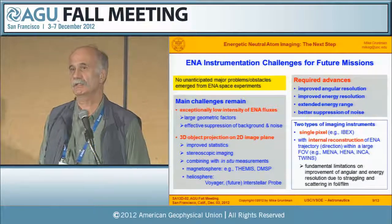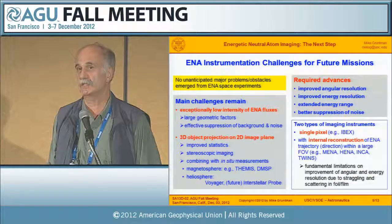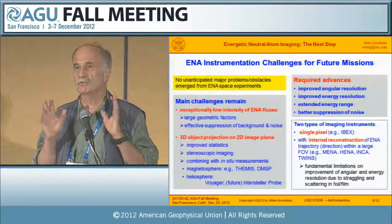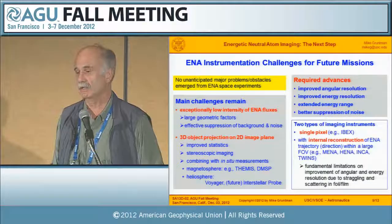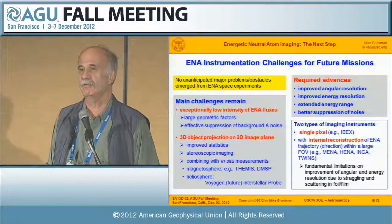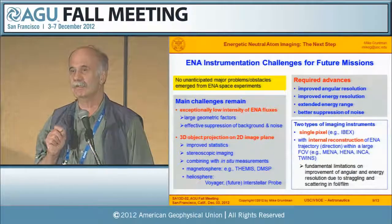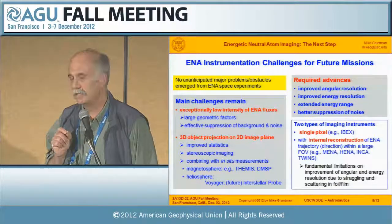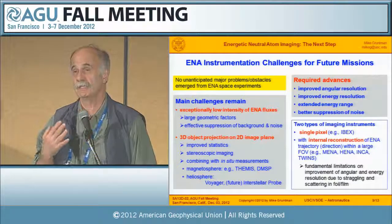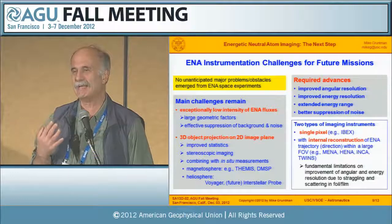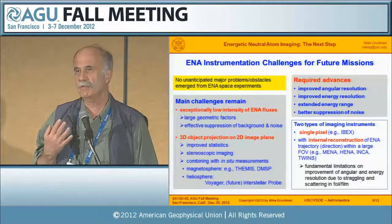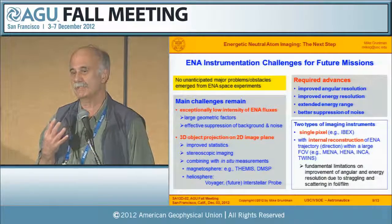Regarding angular resolution, all instruments fall into two categories. One is the single-pixel instrument with a very large geometrical factor but pointed in one direction — the spacecraft must scan the sky to obtain images. The second category has intrinsically wide field of view, with capabilities to extract directional information from incoming ENAs within that large field of view. This latter kind has fundamental limitations because thin foils — or sometimes films — sitting at the front create straggling, meaning spreading of energies of incoming particles, and scattering. This places fundamental restrictions on improving energy resolution using this approach.